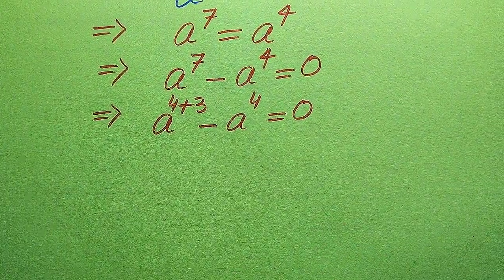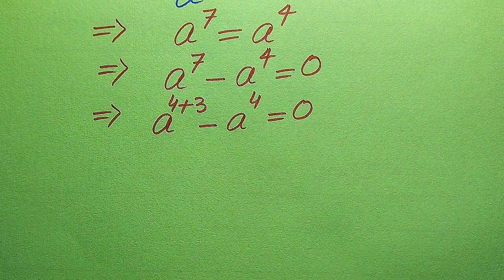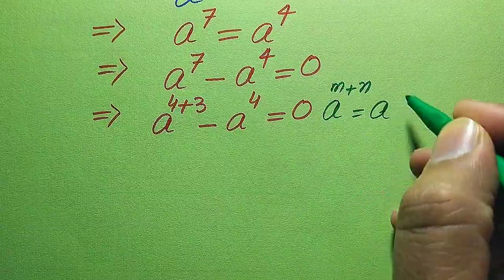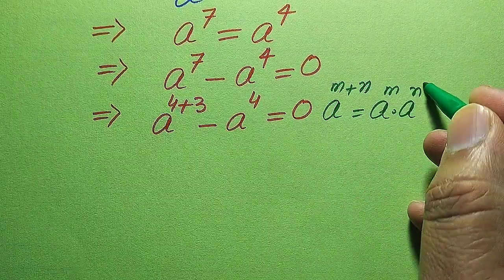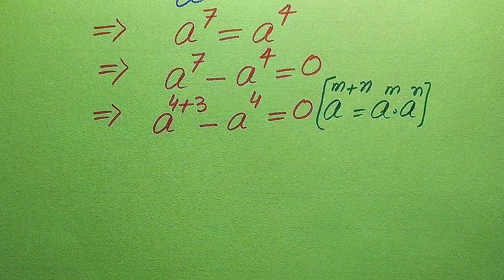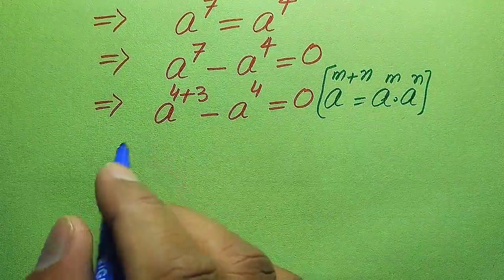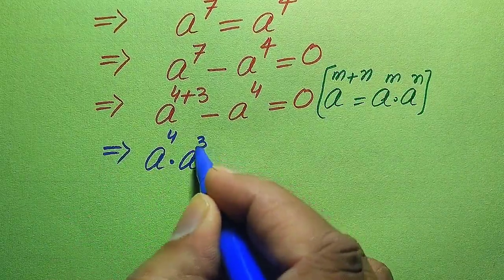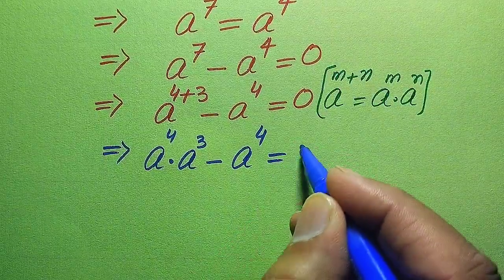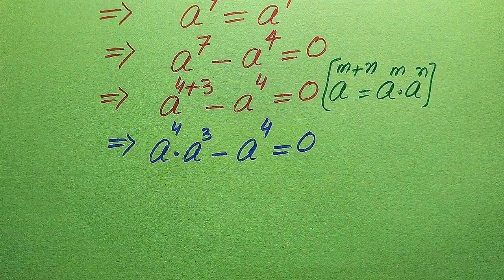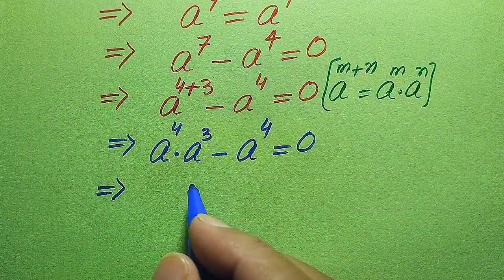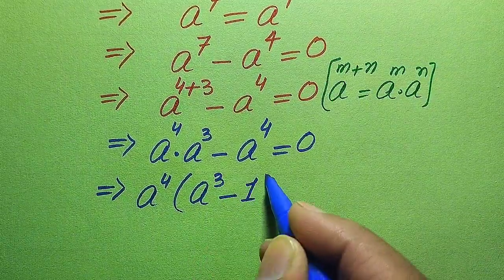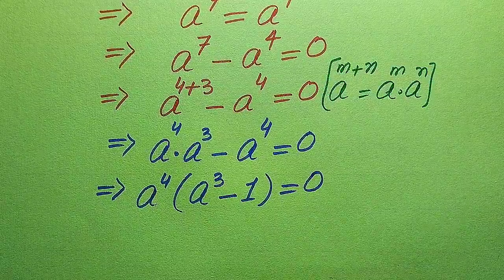In the next step we use the exponent law: a to the power of m plus n equals a to the power of m multiplied by a to the power of n. According to this rule, we break the exponent and write a to the power of 4 multiplied by a to the power of 3 minus a to the power of 4 equals 0. From both terms we take common a to the power of 4, and we get a to the power of 4 times the quantity a cubed minus 1 equals 0.